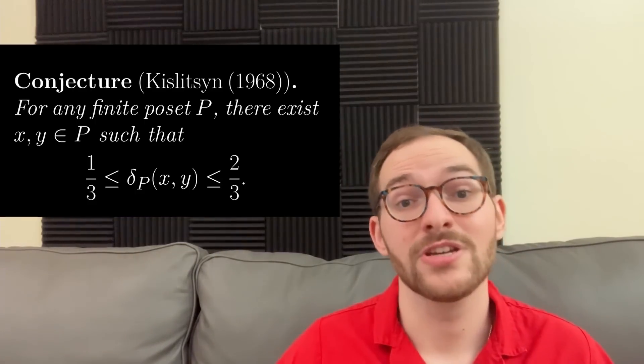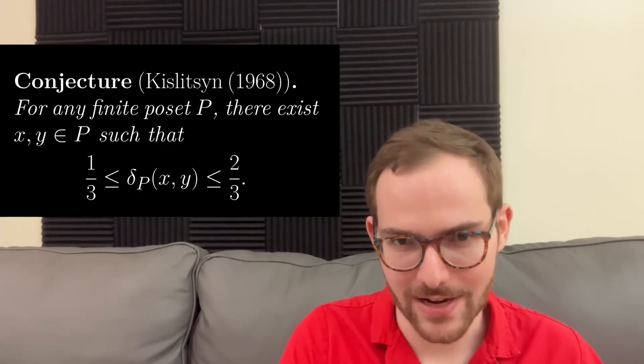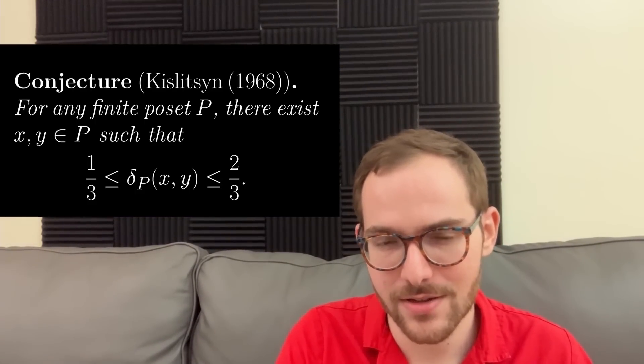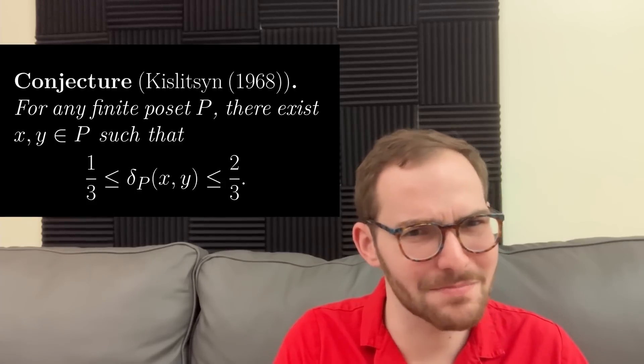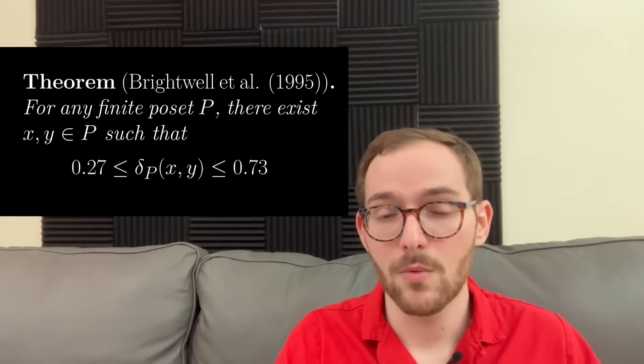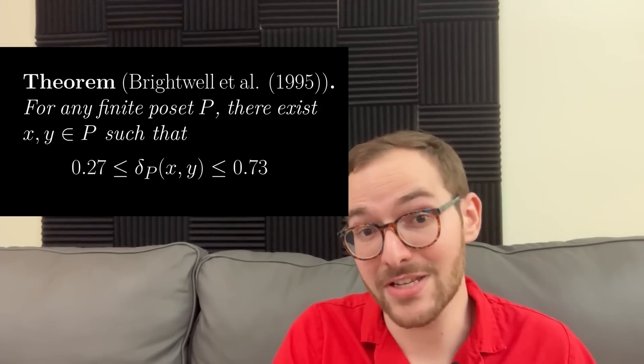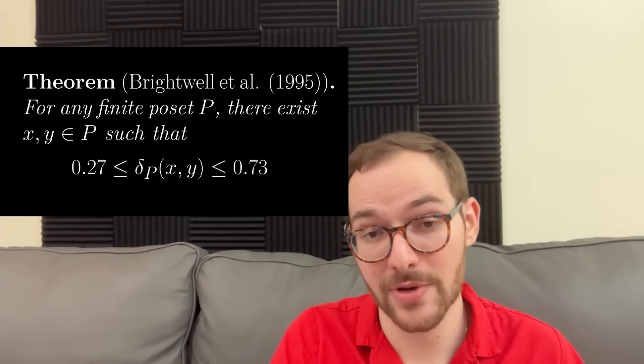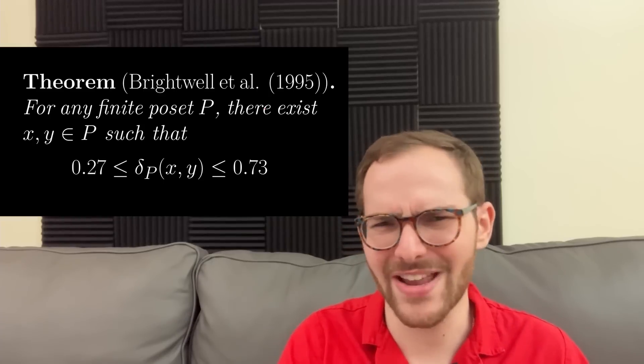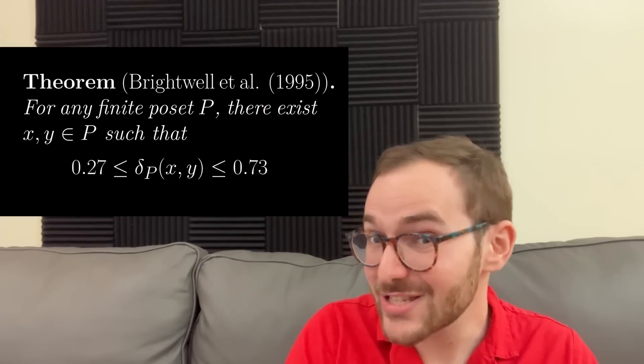An absolutely enormous amount of research has been done on this problem, but nobody's been able to solve it. However, there has been some partial progress. What we know is that there is always a pair whose sorting probability is between 27% and 73%. While that's not quite as good as one-thirds and two-thirds, it is good enough to be pretty useful.